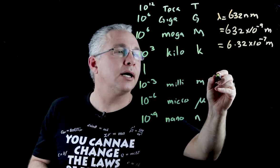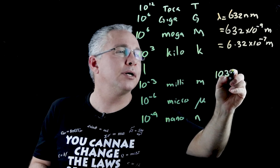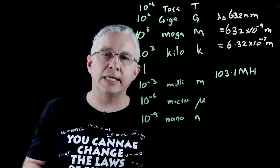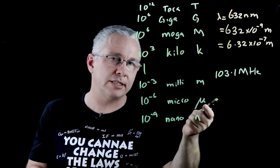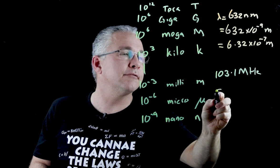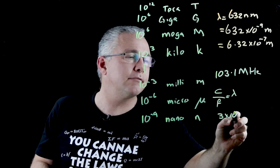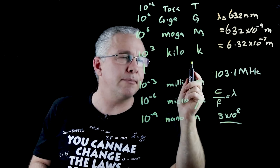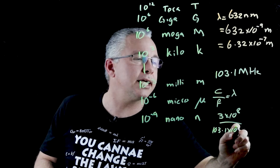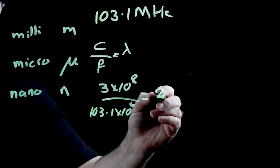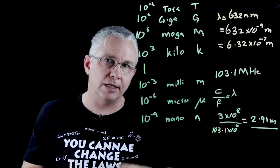Another example: let's say we have the frequency of a radio station — 103.1 megahertz — and I need to work out the associated wavelength. For a radio wave, I know that speed divided by frequency gives me the wavelength. My speed is 3 times 10 to the power of 8, the speed of light, divided by the frequency. But remember, this has to be the correct SI unit, so I go 103.1 times 10 to the power of 6. Calculating that out, I get 2.91 meters, which is the appropriate length for a radio wave of this particular frequency.